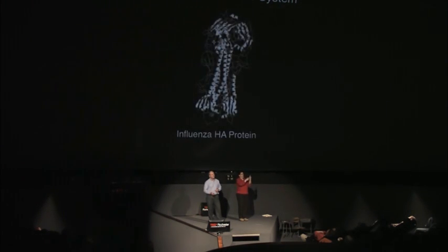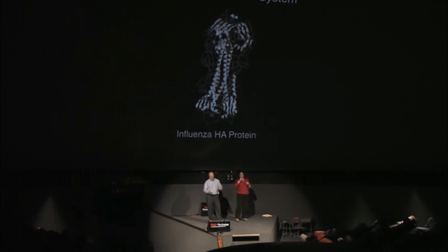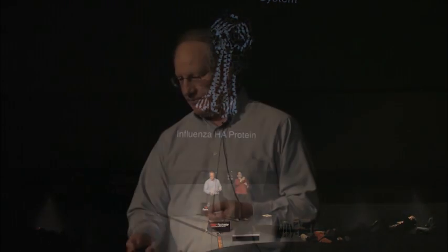This is the structure of the target for the vaccine for influenza—this is a hemagglutinin protein. It's actually a trimer, and it looks fairly easy to do something with using an antibody, with lots of sites to bind.